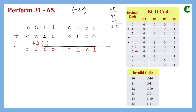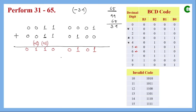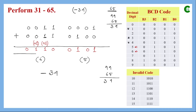Going back to the algorithm: if there is no carry, the result is negative and it is in 9's complement form. We need to find the actual value from that 9's complement form. The result is 0101 0110, which is 56 in decimal. Finding the 9's complement of 56: 99 minus 56 gives 43... we get 4 and 3, meaning the final result is minus 34.